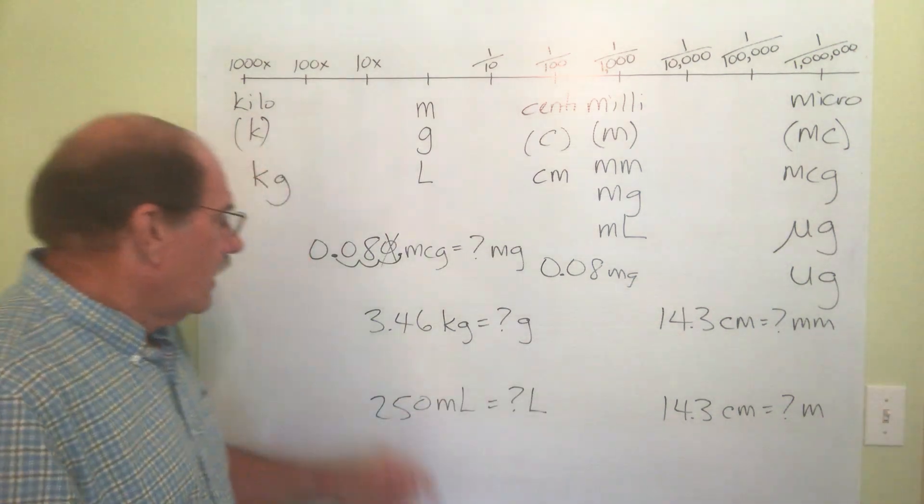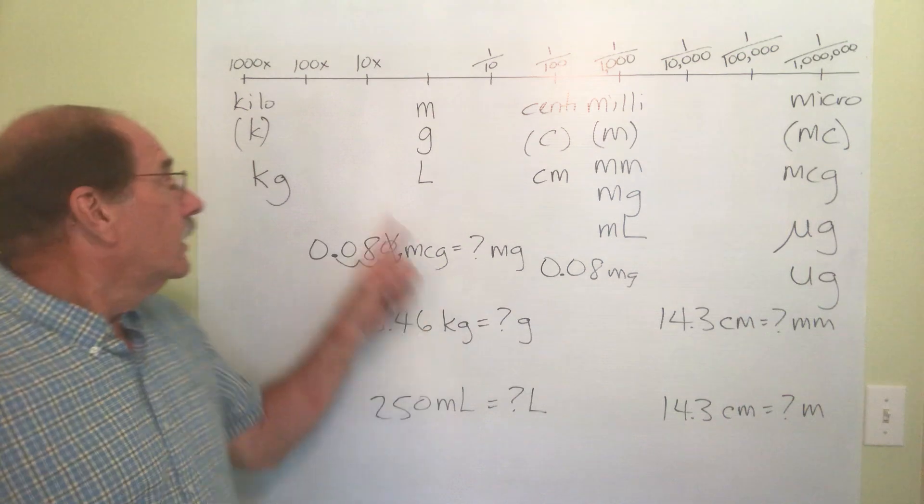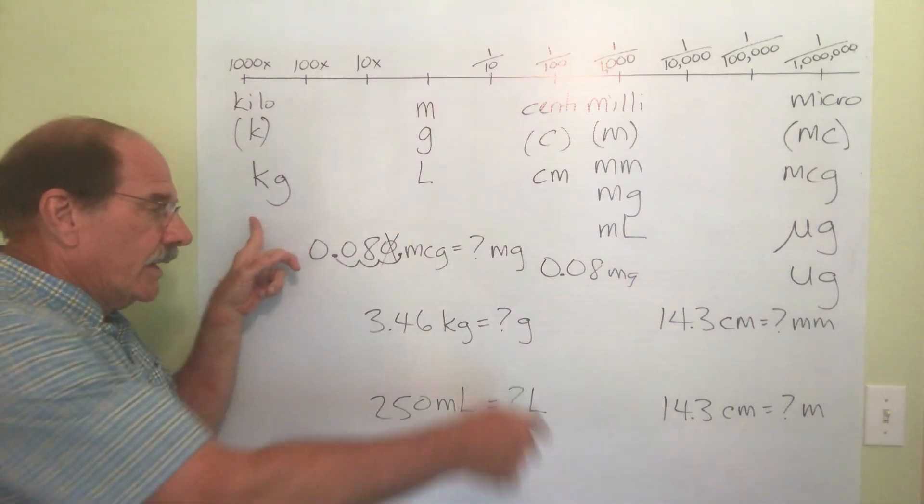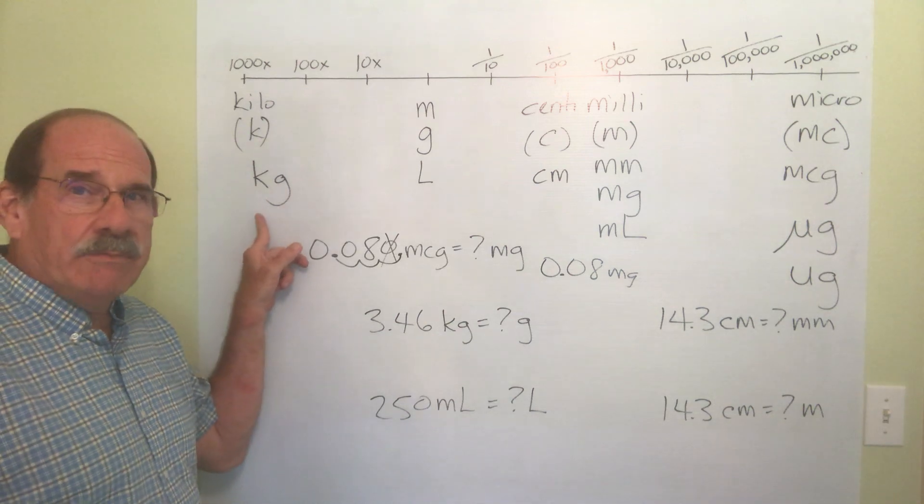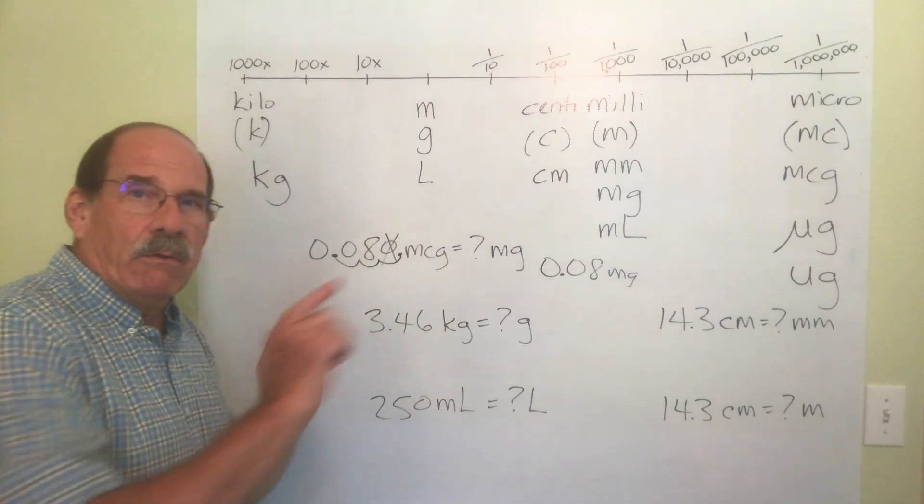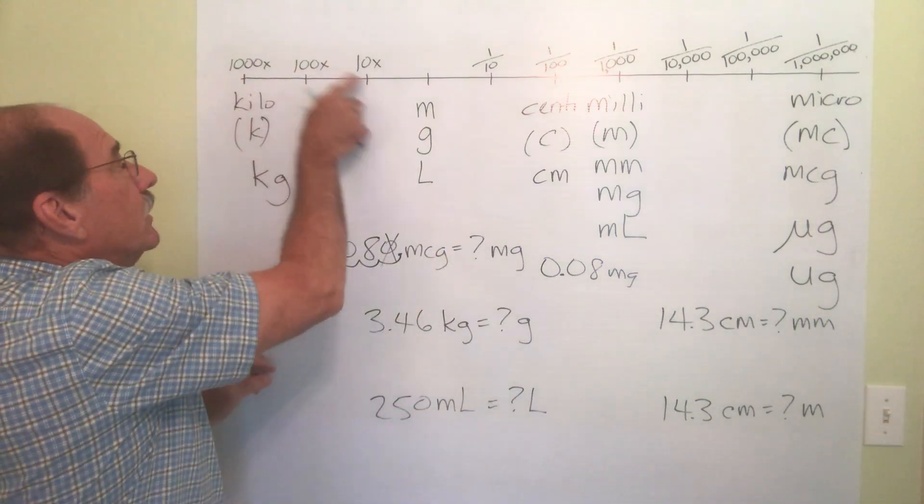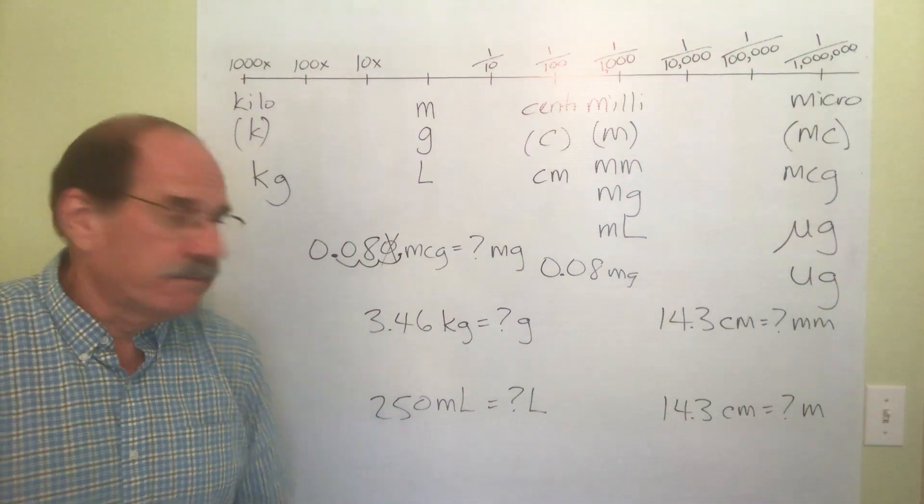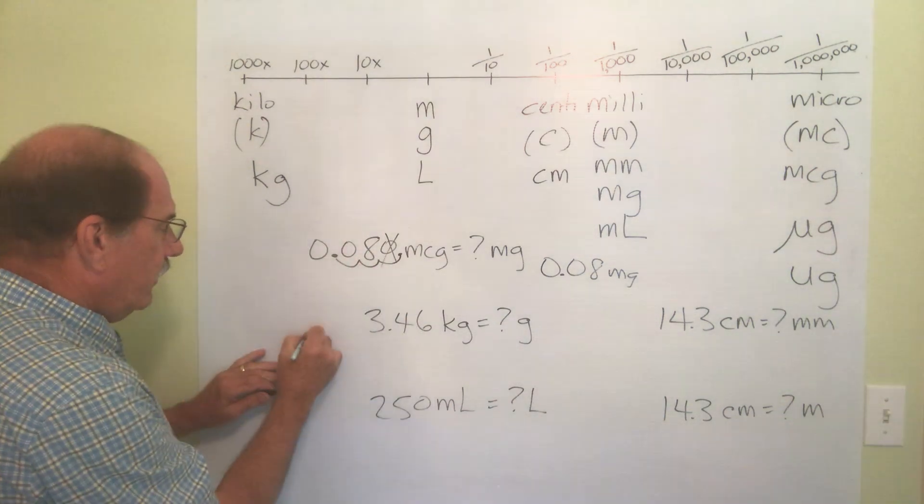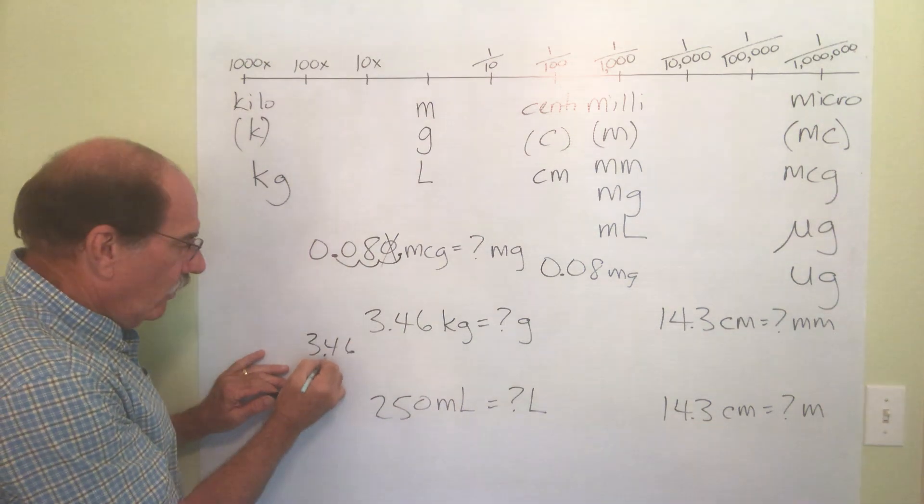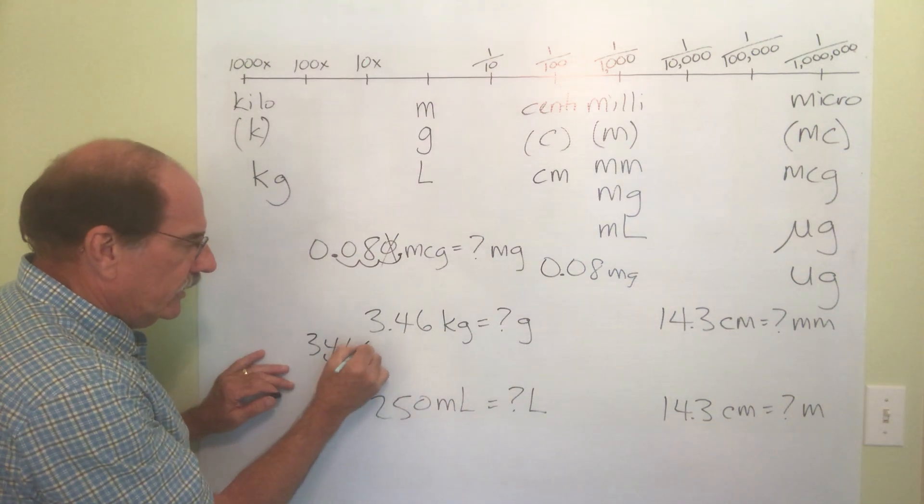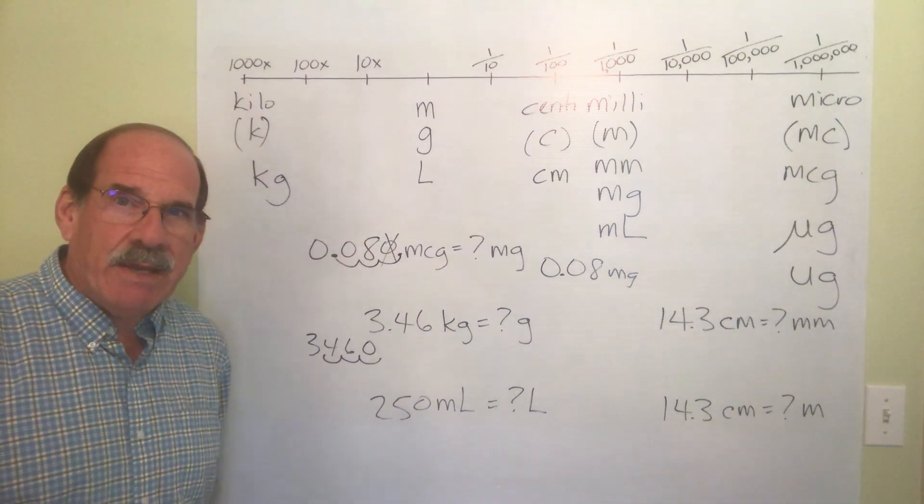He's not crunching crumbs yet. So I'm going from kilograms, which is here, to grams. So to go from kilograms to grams, I move to the right. 1, 2, 3 places. So I start out with this 3.46. The dot's right there. I go 1, 2, 3. Put the zero there to take up the space.